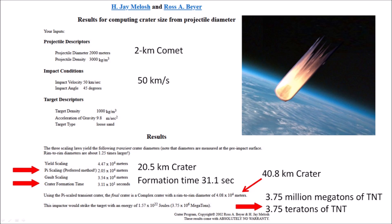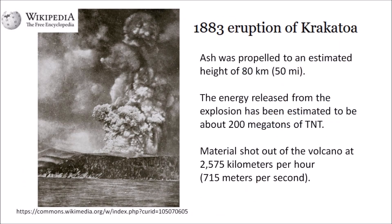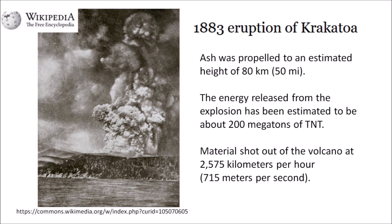It is difficult to imagine the magnitude of such an explosion. One of the most powerful explosions in recorded history is the 1883 eruption of Krakatoa volcano, which propelled ash to a height of 80 km with energy equivalent to 200 megatons of TNT, ejecting materials at 2,575 km per hour or 715 meters per second. The explosion of Krakatoa was enormous, but it was 18,000 times smaller than the Younger Dryas Comet impact that was calculated.